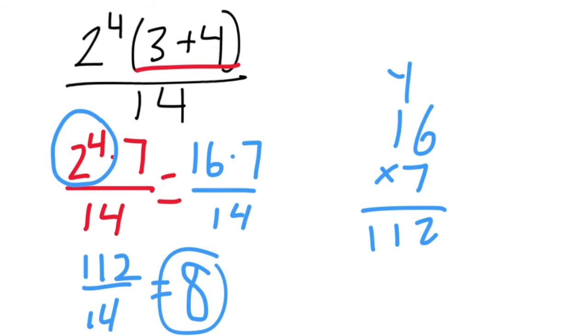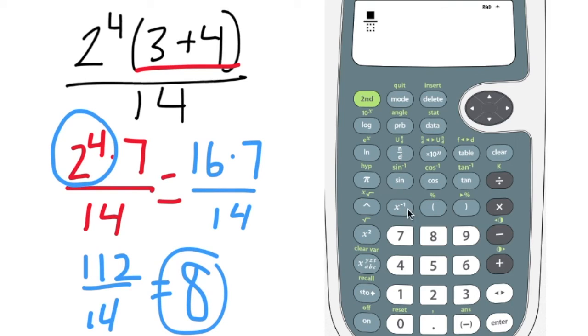Even one like this can be completely typed in and evaluated by the calculator. You can use the fraction button. Type in 2 to the 4th. Now press the arrow. See here the parentheses is still in the exponent. So I need to delete that.